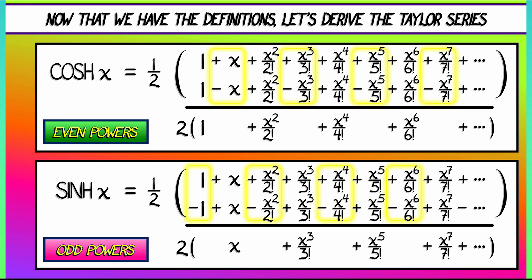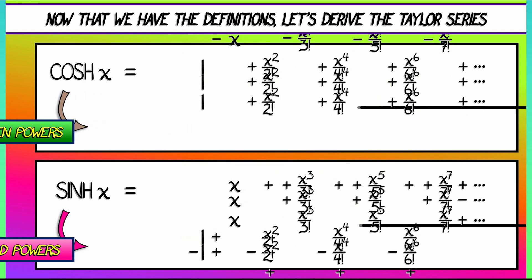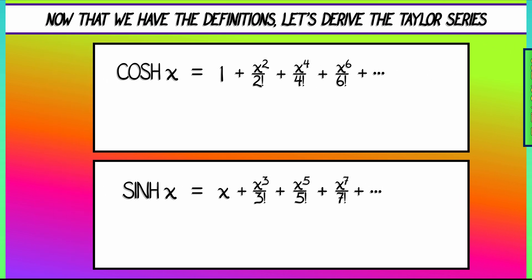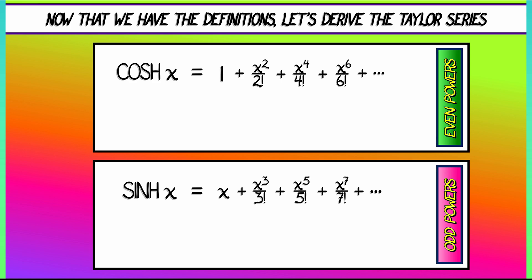Now, because of that one half that was out in front, that cancels with the 2, we kind of see why that was in there now. And in the end, after some algebraic simplification, we see that the hyperbolic cosine consists of all the even terms of the exponential function. The hyperbolic sine consists of all the odd terms of the exponential function. This is very satisfying. This is one of the reasons why these functions are given these names.